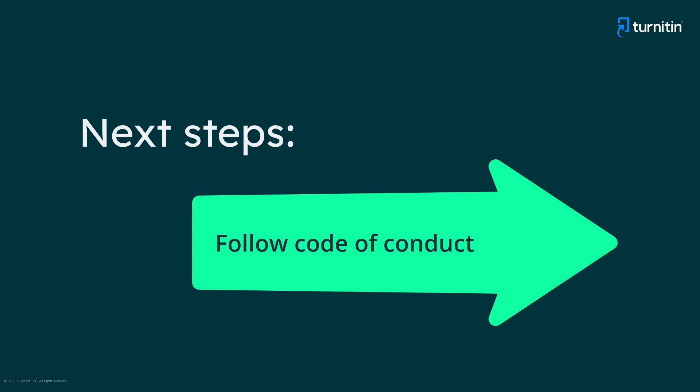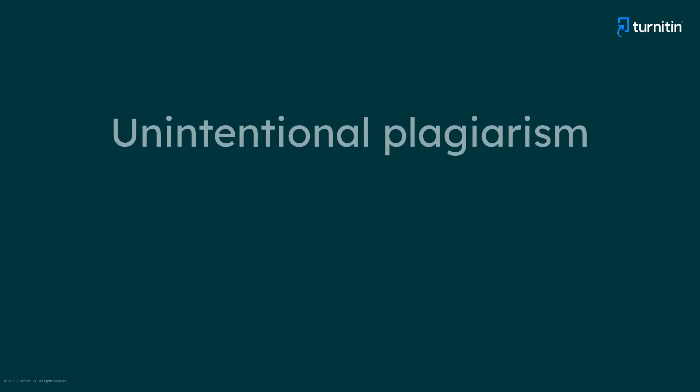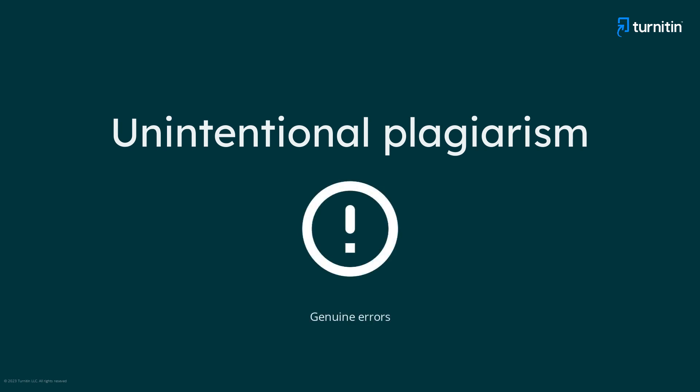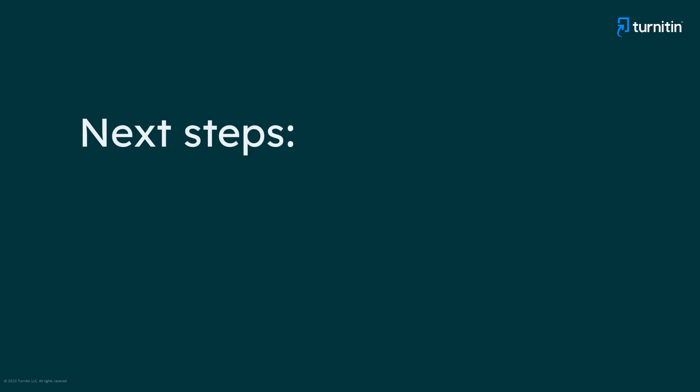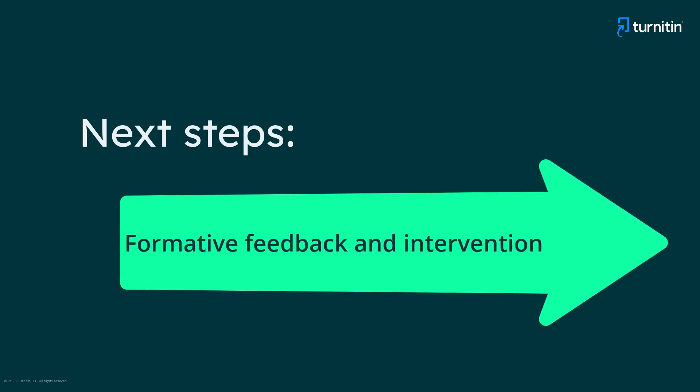So we would need to refer to the code of conduct or academic integrity policy that applies. But what does it look like when plagiarism is unintentional? Consider if a student has made genuine errors in formatting citations, or the proper quoting or paraphrasing of sources. This may indicate a gap in skills that requires targeted instruction. Our next steps here would be to provide formative feedback to the student about the areas in need of attention, and supplement that feedback with the appropriate level of intervention needed.